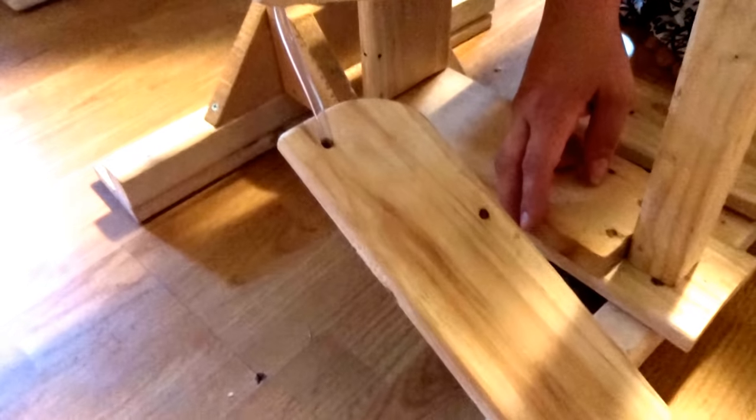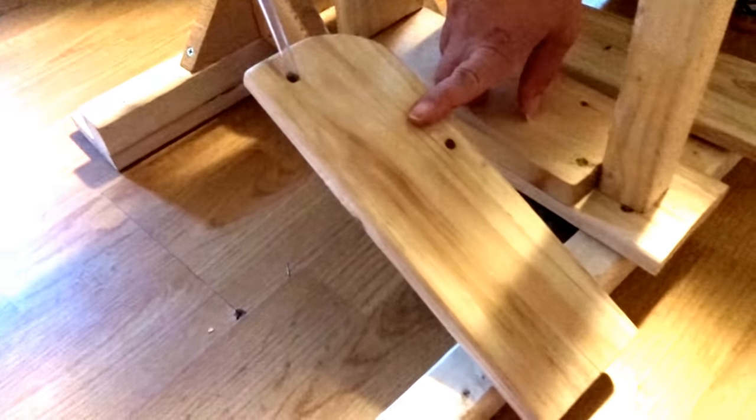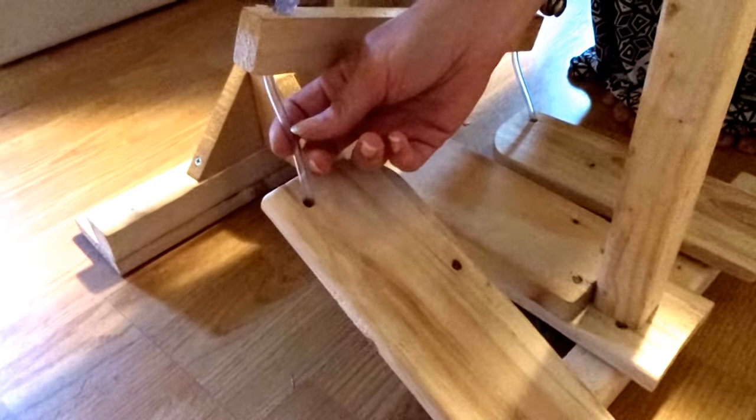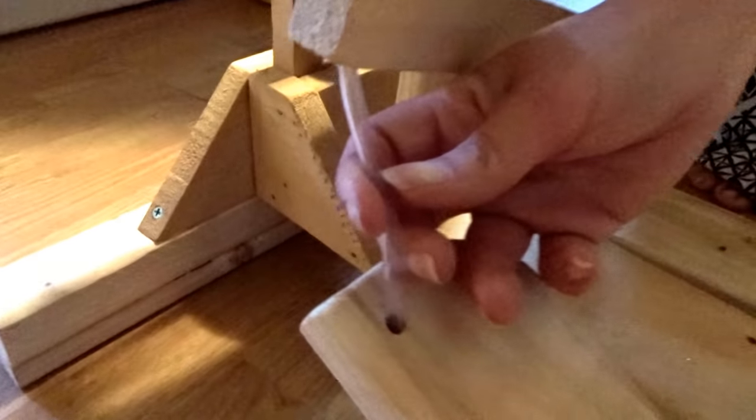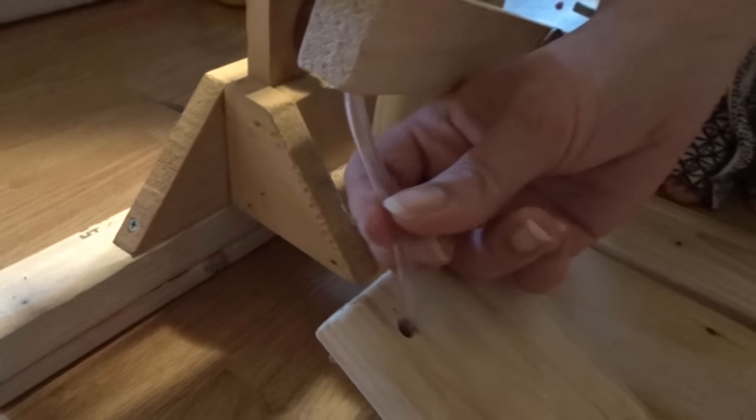For my treadles, I basically did the same thing that it calls for in the Dodek. My treadles are about 10 inches long. I drill the hole down through here. I used some nice cording—they have it for about 19 cents a foot at Lowe's. I just used this plastic tubing.